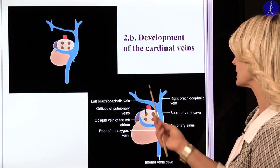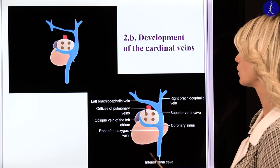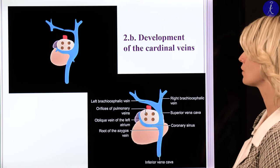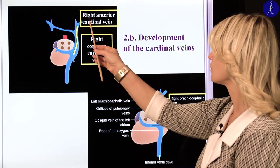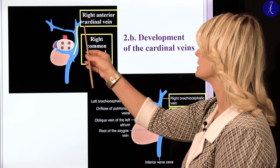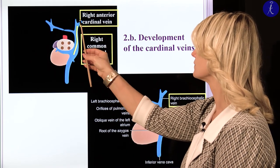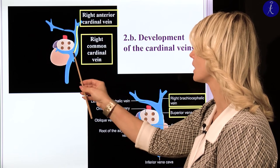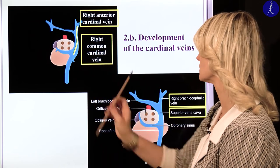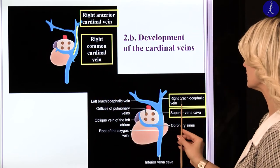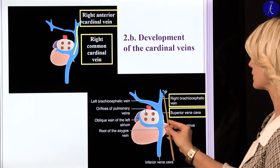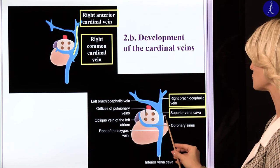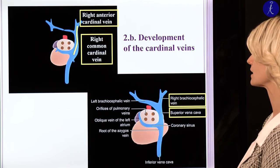During this shift from the left side to the right side, one part of the sinus horn will fuse to the cavity of the right atrium and will form the smooth part of the right atrium, which is called the sinus venarum cavarum. Here you can see almost the final position of the veins.